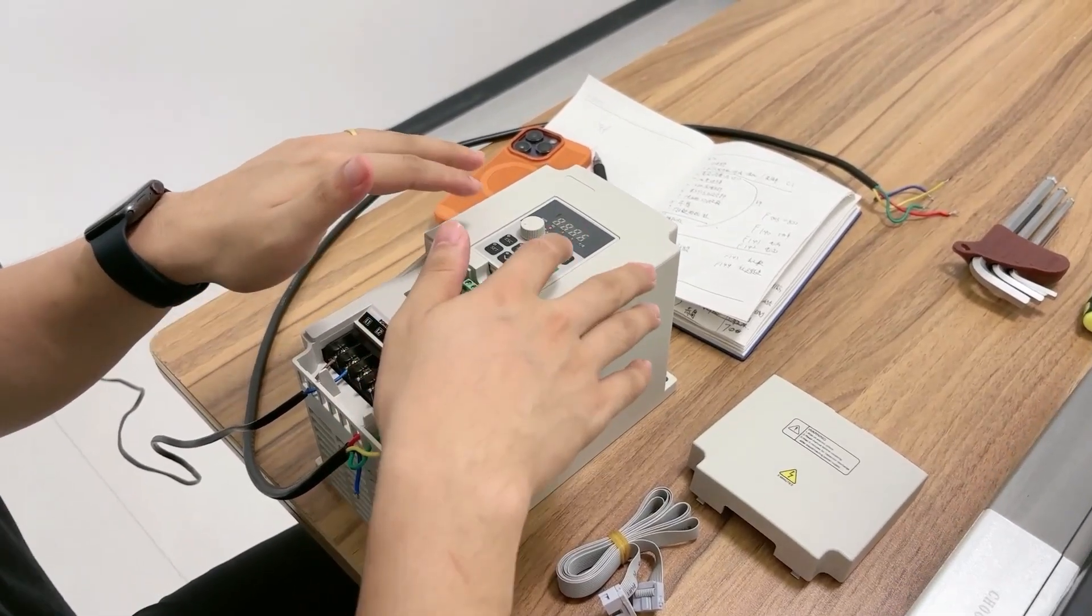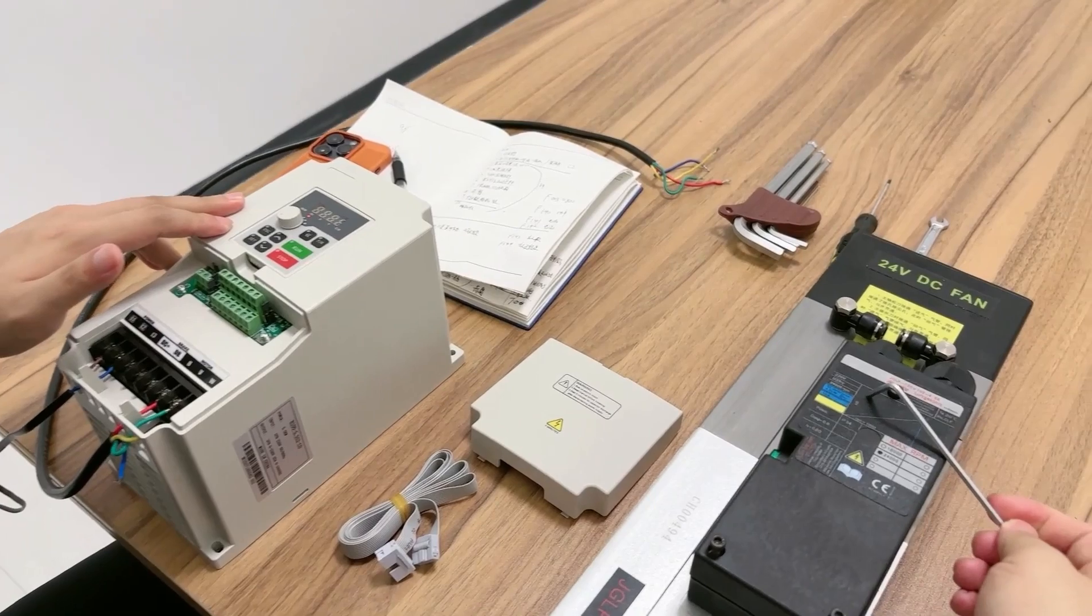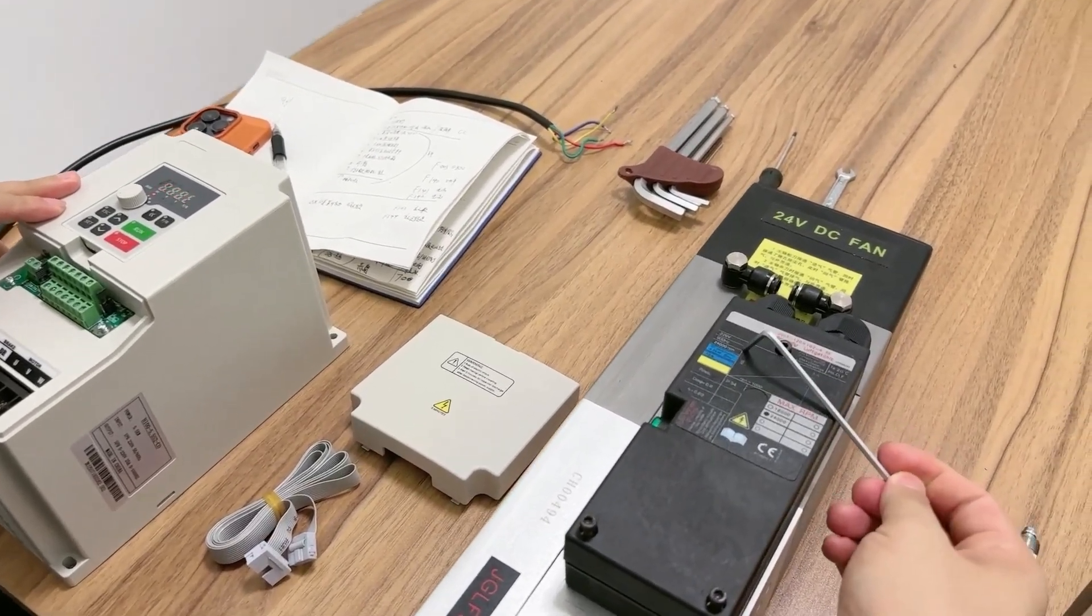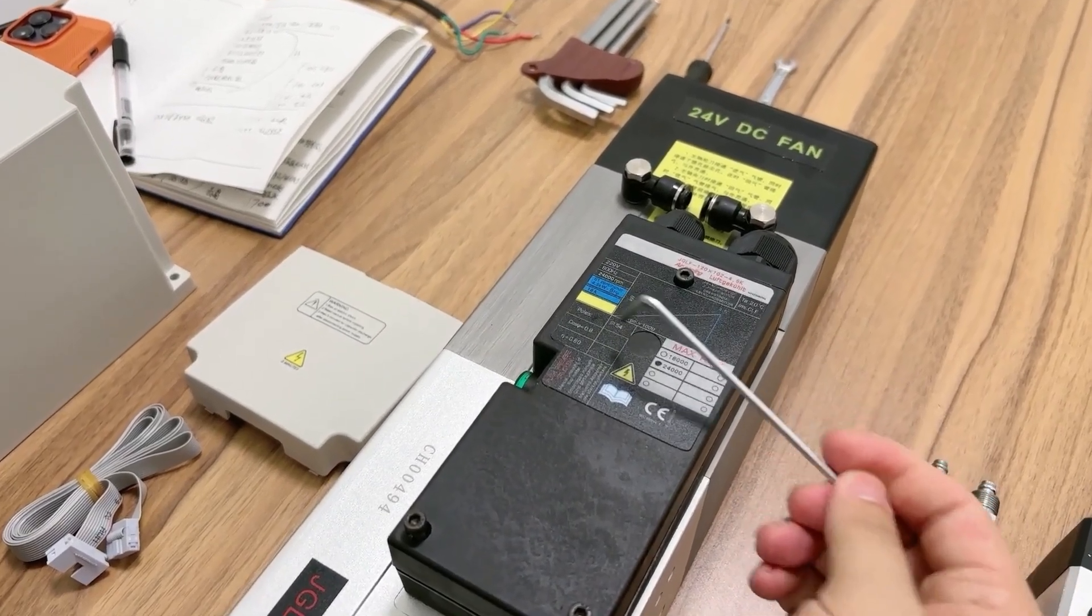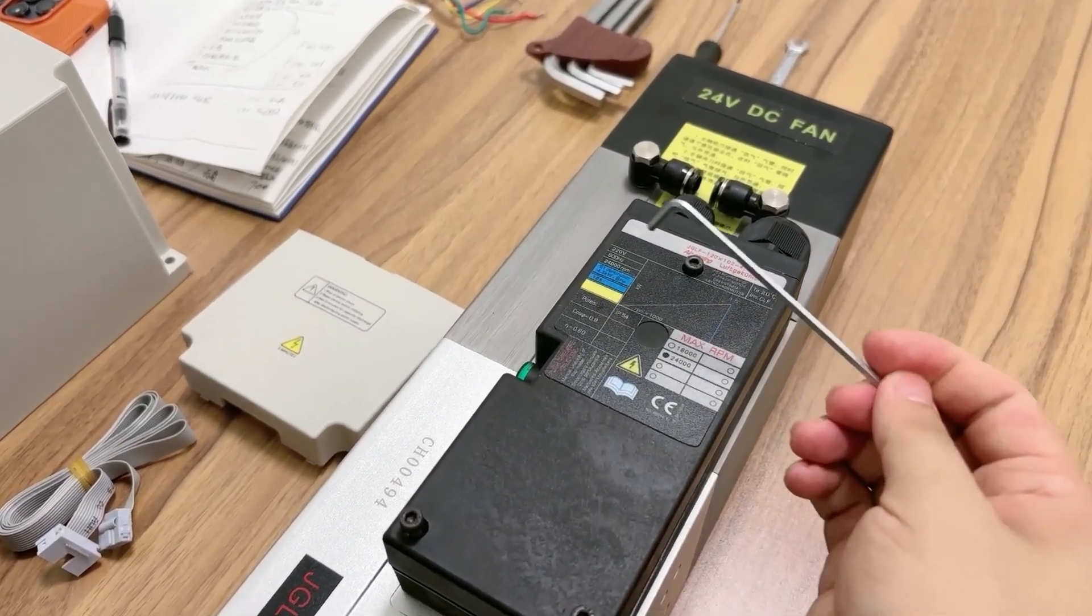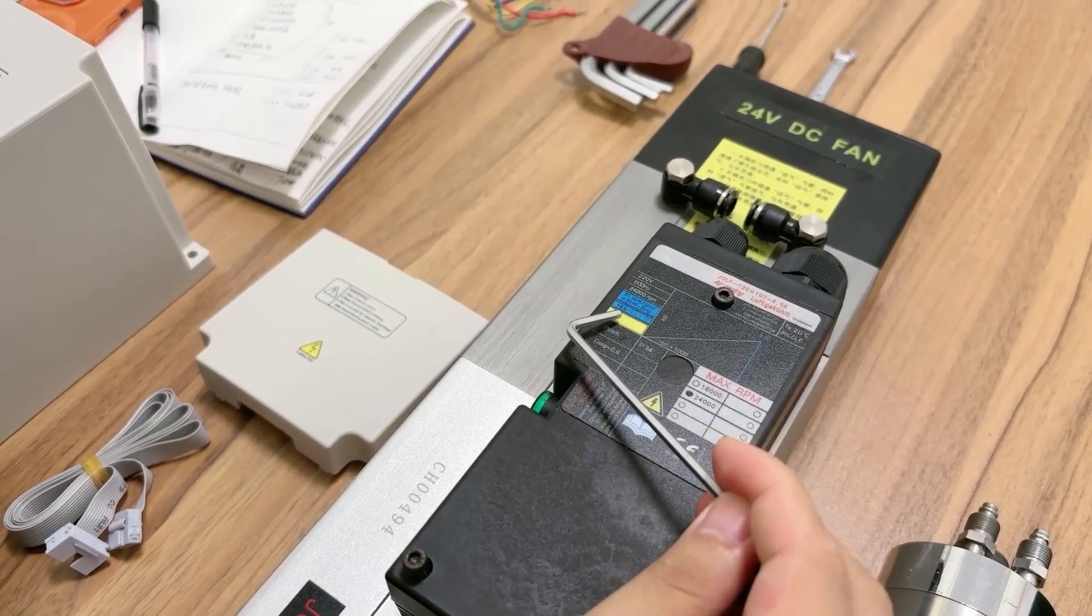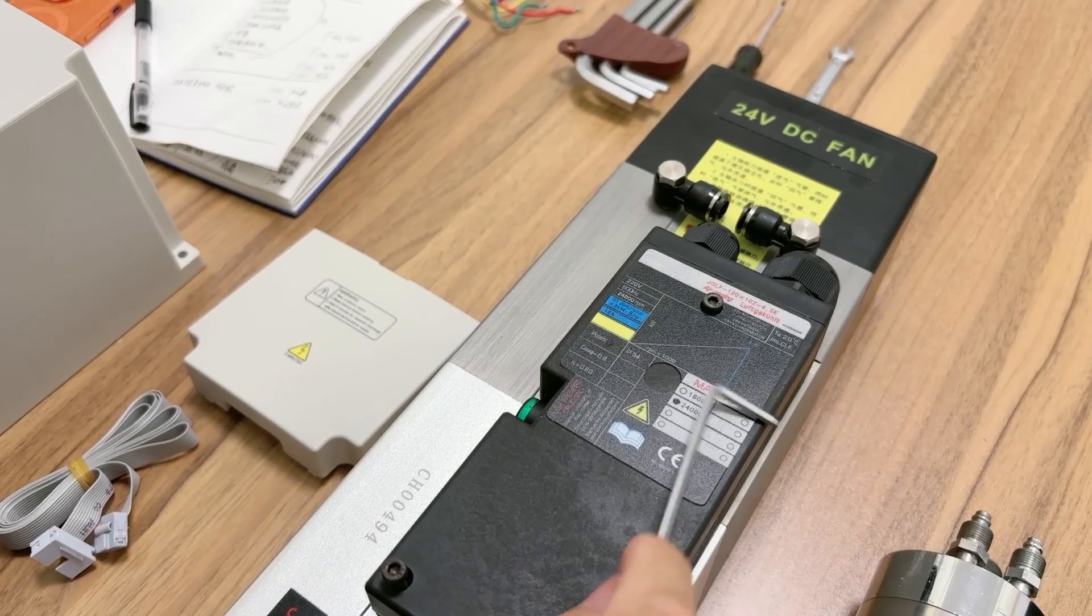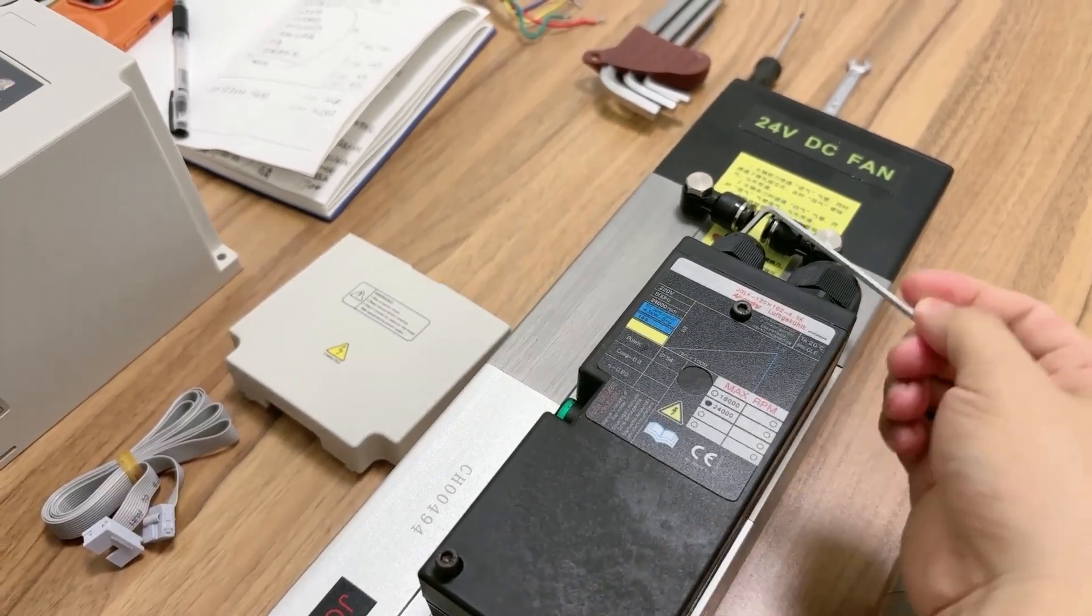Before we run the spindle, we need to set the parameters according to our spindle's specifications like frequency, speed, and poles. This one is four poles and it has a current of 16 amps. These are the main specifications that need to correspond with our VFD.